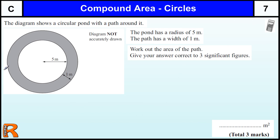Here is a question about area of circles. We have a diagram with a circular pond with a path around it. So there is a pond in the middle here, this is the path.